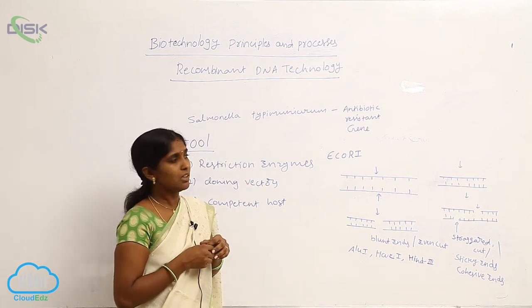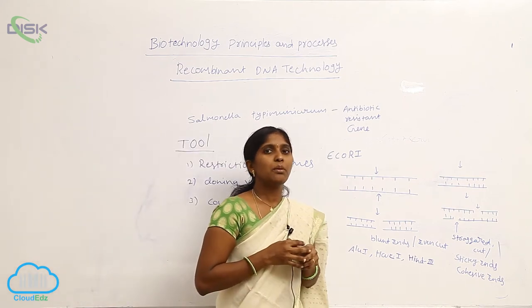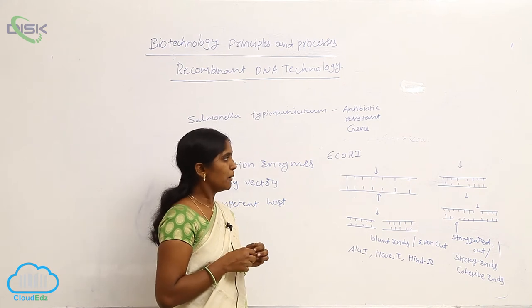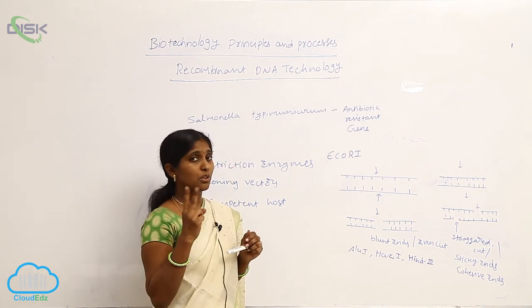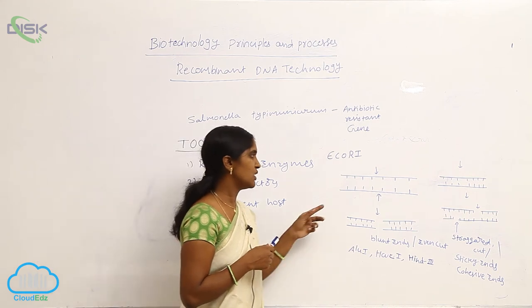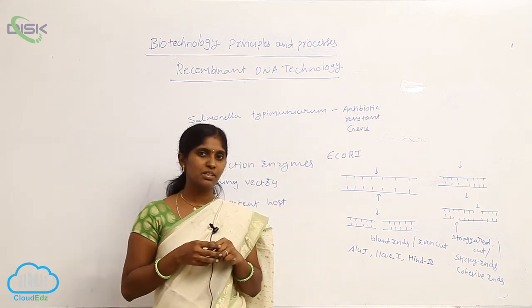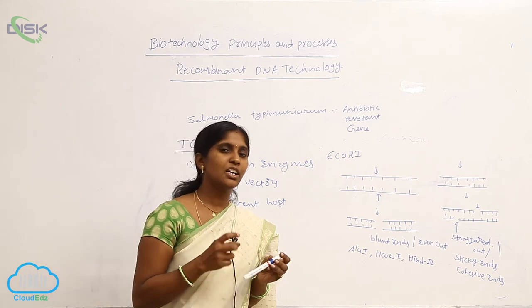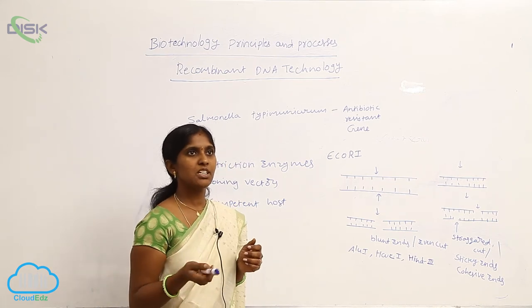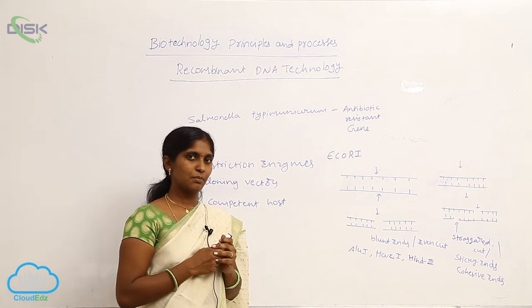Restriction enzymes are used in DNA technology. They produce two types of cuttings. Here we see palindromic sequences. Palindromic sequences means that in double-stranded DNA, reading the sequence from 5' to 3' on one strand and 3' to 5' on the other, the reading frame is the same.